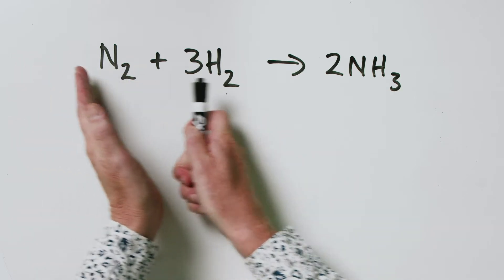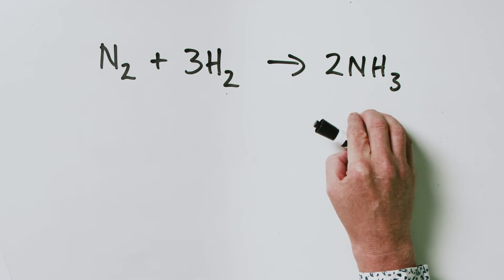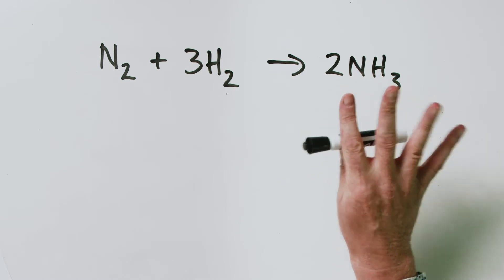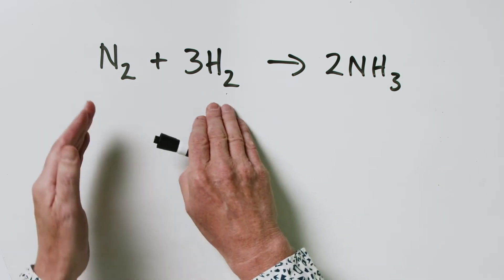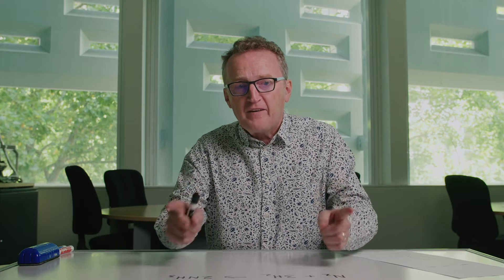What a balanced chemical equation doesn't tell us is how far the actual reaction goes. In actuality, this reaction doesn't go to completion. If you start off with one mole of nitrogen and three moles of hydrogen, you don't get the reaction going all the way to the right-hand side ending up with two moles of ammonia. What it does tell you is the mole ratio in which these guys actually react. The reaction doesn't have to go to completion, but for every mole of nitrogen that does react, three moles of hydrogen are required to react with it.